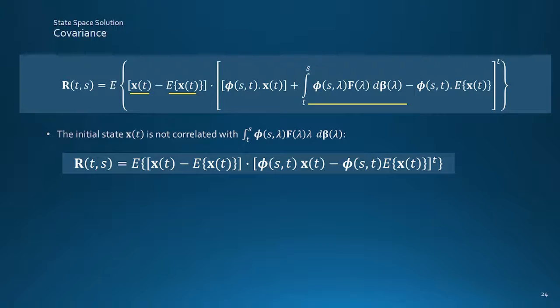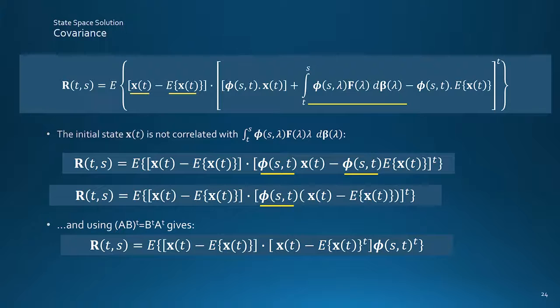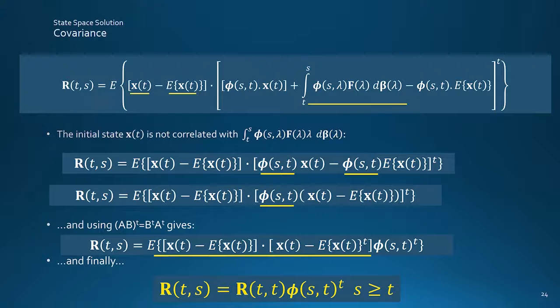Now the STM can be factored out, and pushing the transpose through the individual terms then leaves this, which exposes the expectation of the two square bracket terms as a covariance matrix for zero time lag RTT.